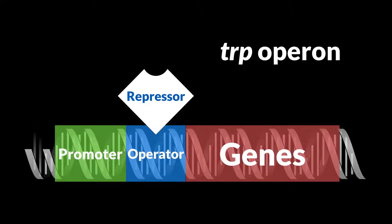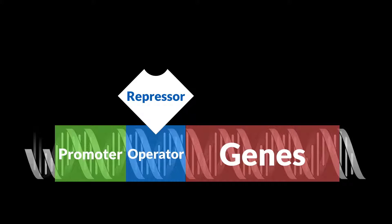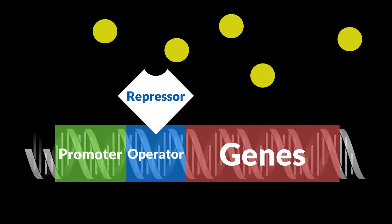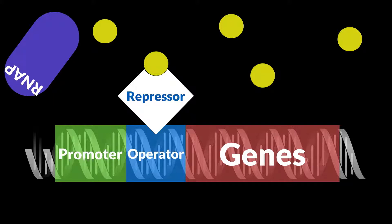The trp operon works a bit differently. In E. coli, another molecule is very vital to the survival of the bacteria — it's called tryptophan. Tryptophan is an amino acid stored in proteins, and you pretty much need it to create all sorts of proteins. The trp operon has a mechanism for creating tryptophan from its genes. Tryptophan is usually found in abundance around the cell, and normally a tryptophan molecule is bound to the repressor. The repressor on the trp operon is different from the one on the lac operon: it will stay on the operator as long as tryptophan is bound to it. As long as the repressor is bound to the operator, RNA polymerase cannot bind to the promoter, which means no more tryptophan will be created.